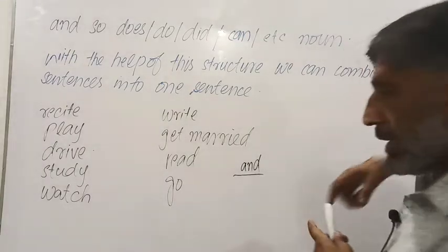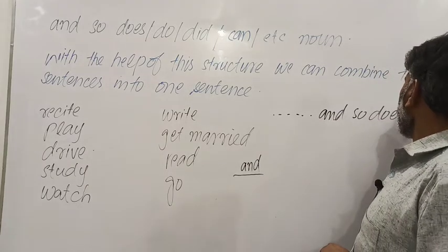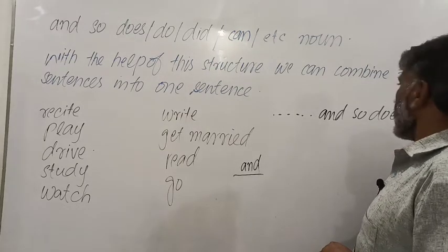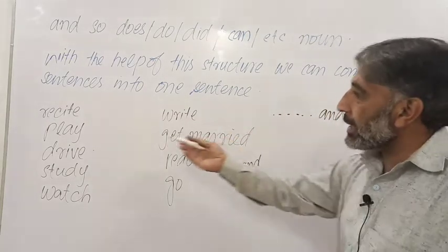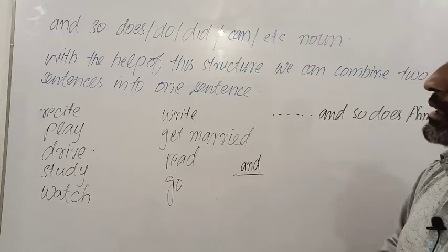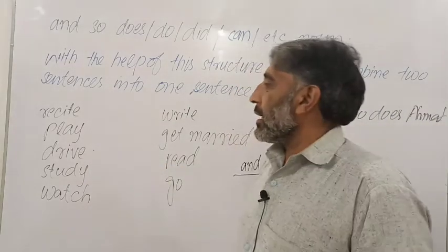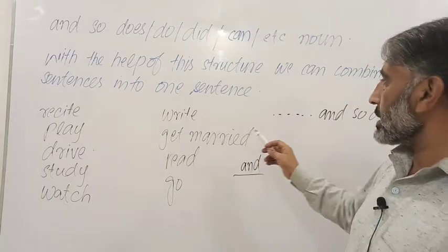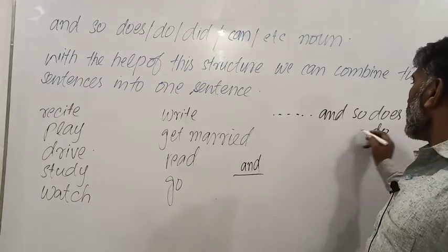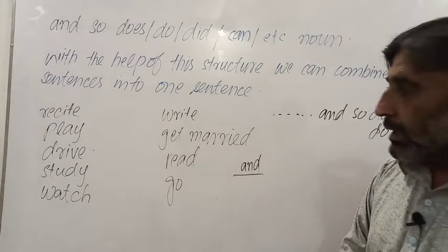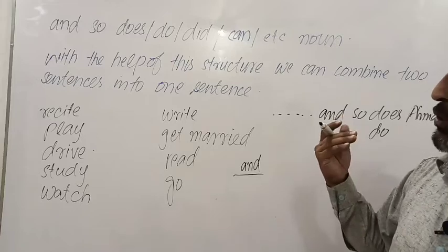جیسے Bilal recites the Holy Quran and so does Ahmad — احمد بھی قرآن مجید کی تلاوت کرتا ہے۔ اسی طرح خالد plays cricket and so does Arshad۔ اگر دو یا دو سے زیادہ subjects ہوں جیسے Bilal and Salim drive a car، انور اور خالد بھی گاڑی چلاتے ہیں — so: Bilal and Salim drive a car and so do Khalid and Salim. جب plural ہو تو do والا structure لگائیں گے۔